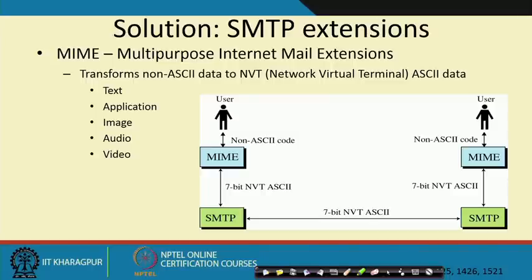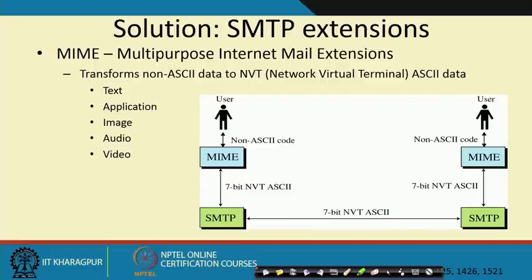The communication is between SMTP server and client at both ends, and the other end also has MIME to decode content for the user. This Multipurpose Internet Mail Extension provides a way to communicate non-ASCII character sets comprising text, application, image, audio, and video. Some mail servers may not accept application or executable files, some may not accept video files, and there may be restrictions on size. These are application-level restrictions above SMTP.